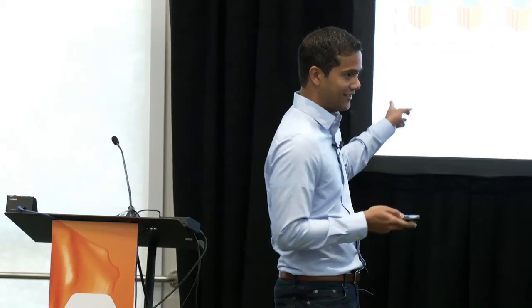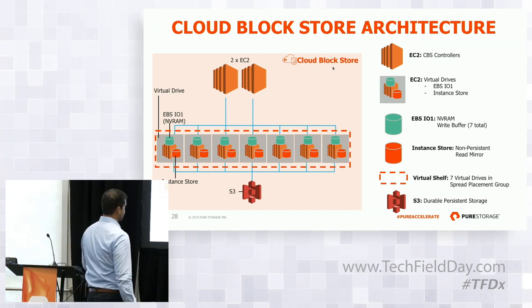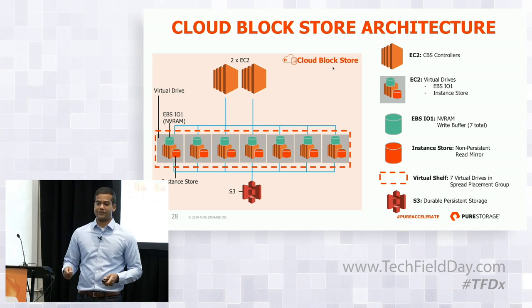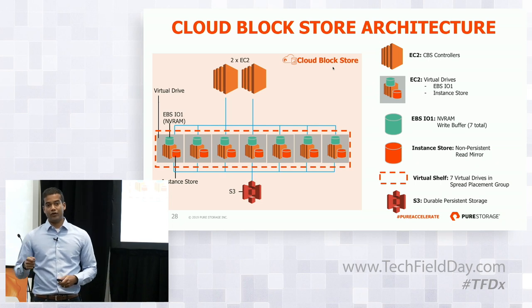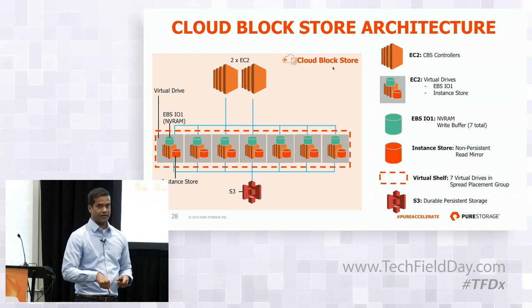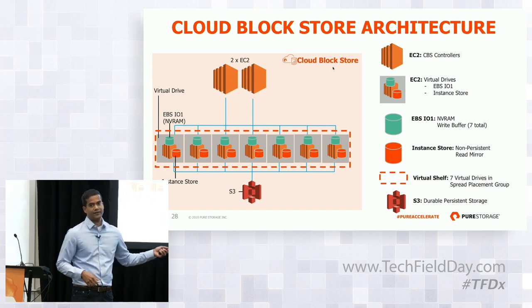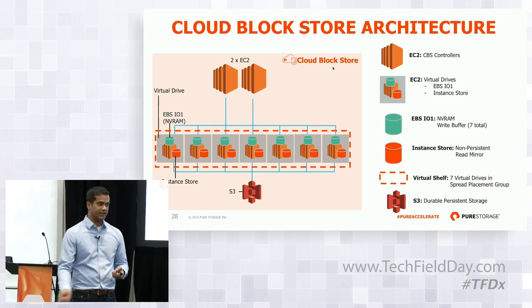We ended up coupling our instance stores. The EC2 instances we're using are i3 instances. i3 is interesting because it has very large locally attached NVMe flash drives. We mirror all of the data that's de-staged from NVRAM into both S3 and that instance store. Every byte of data that's been de-staged is extremely durable — it's in S3. It's also extremely fast to read because it's in locally attached NVMe flash, so read latency is very low.